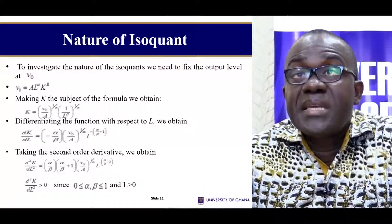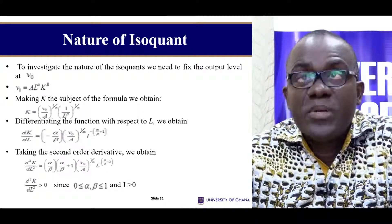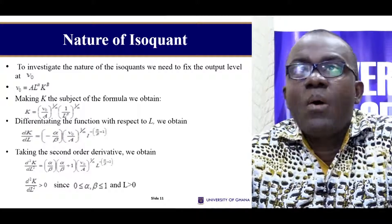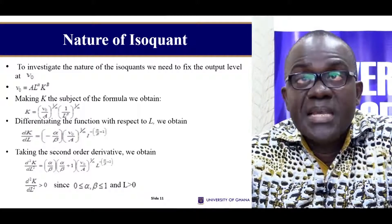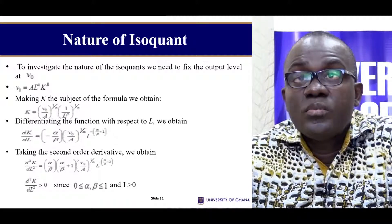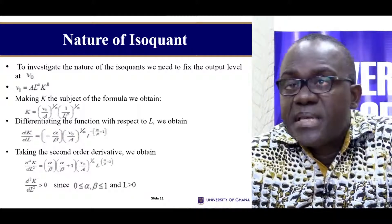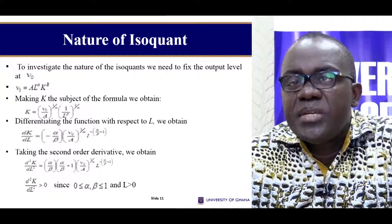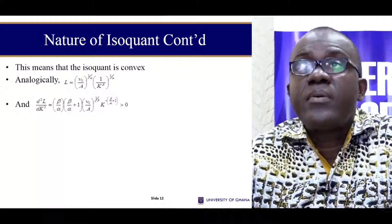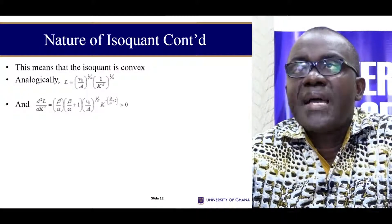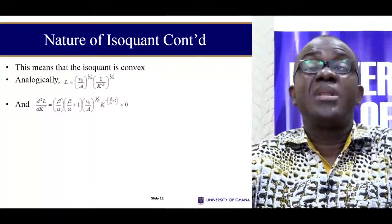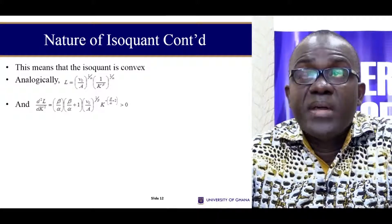Next, what is the nature of the isoquant — is it concave or convex? An isoquant is the combination of inputs that yields a specific level of output. If we assume output Q₀ is constant, we can express K in terms of L. Taking the first-order derivative gives this expression, and taking the second-order derivative gives this. Since alpha is a fraction greater than zero, this expression is greater than zero, confirming the isoquant is convex. We can do the same for L — so for a Cobb-Douglas function the isoquant is convex, which permits its use in many analyses.